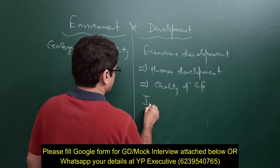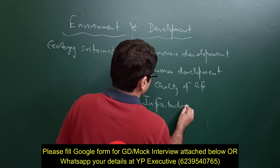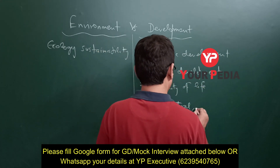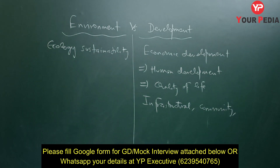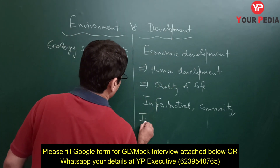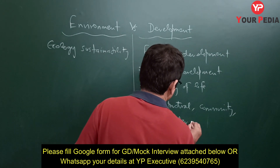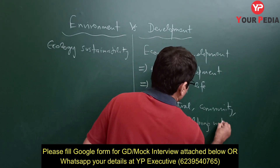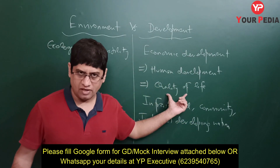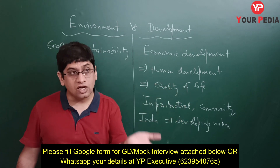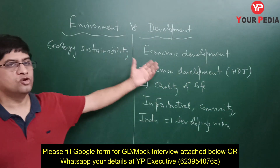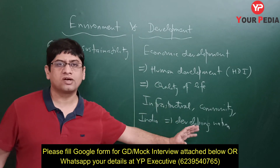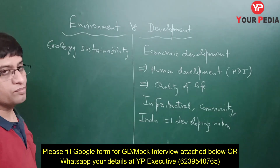Development includes infrastructural development, community development, and other developmental aspects. When we talk about India as a developing nation, development is very closely related to the quality of people's lives. India's Human Development Index is poor, so we need to go for development. Development is related to economic development and the Human Development Index. During development, we exploit natural resources.